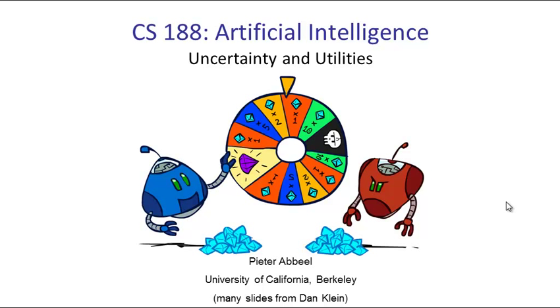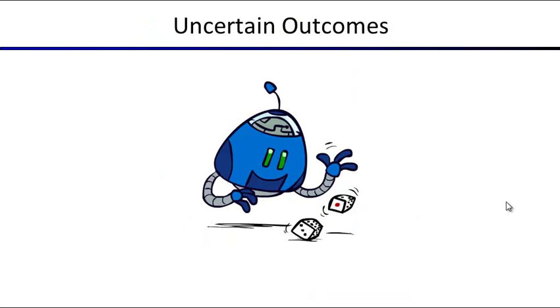Today we're going to look at how to incorporate uncertainty into our systems, and also take a closer look at utilities and where they come from. The first topic is how to deal with uncertain outcomes.